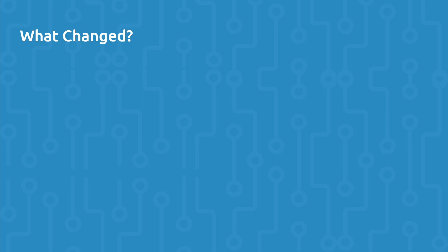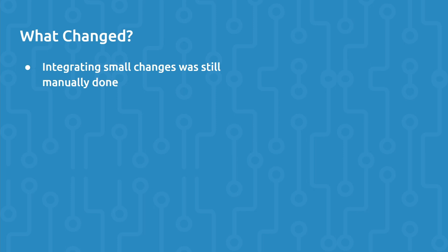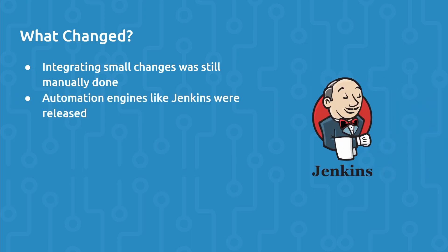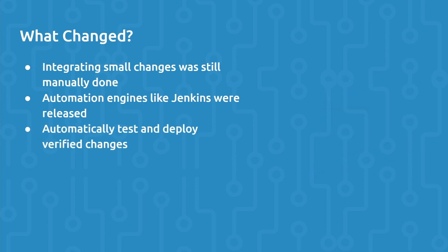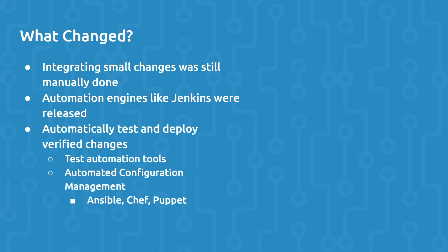Although development teams were integrating small changes more frequently, this was still a manual process. But why not automate the integration process? Since developers were integrating smaller changes more frequently, the integration process was more predictable and less likely to result in merge conflicts. With this in mind, automation engines like Jenkins were released. And can we automatically test changes and deploy verified changes to different environments like staging and production? In addition to automation engines like Jenkins, we also saw the introduction of test automation tools like Selenium, as well as automated configuration management tools like Ansible, Chef, and Puppet.